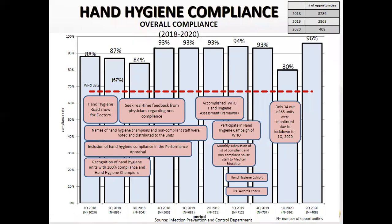This graph shows overall hand hygiene compliance from 2018 to the second quarter of 2020. MMC hand hygiene compliance rates are above the WHO benchmark of 67.2%. In 2019, average compliance was 93%. In the first quarter of 2020, compliance decreased to 80%, partly due to lockdown and closure of outpatient and some inpatient units due to COVID-19. However, in the second quarter of 2020, compliance increased to 96%.